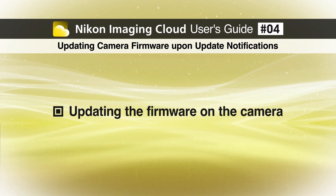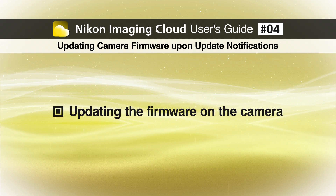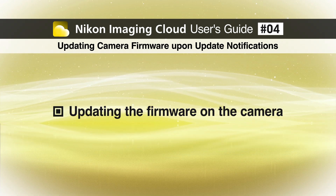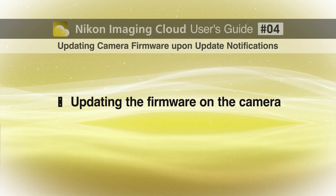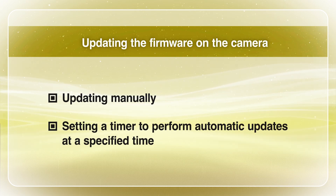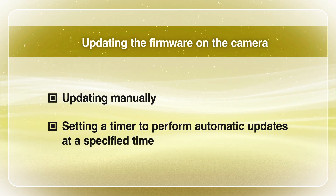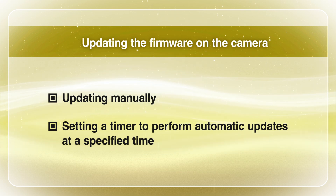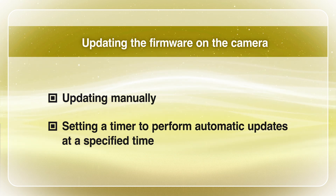Next, we will go over how to update the firmware using the camera. To run firmware updates on the camera, you can either run the update manually, or set a timer so that the update is run automatically at a specified time.